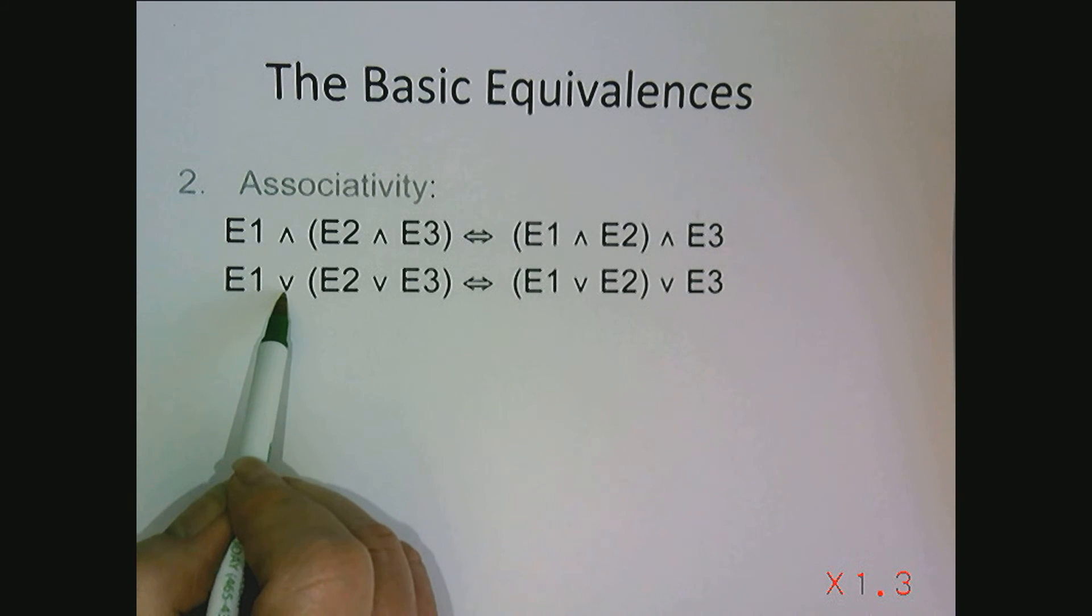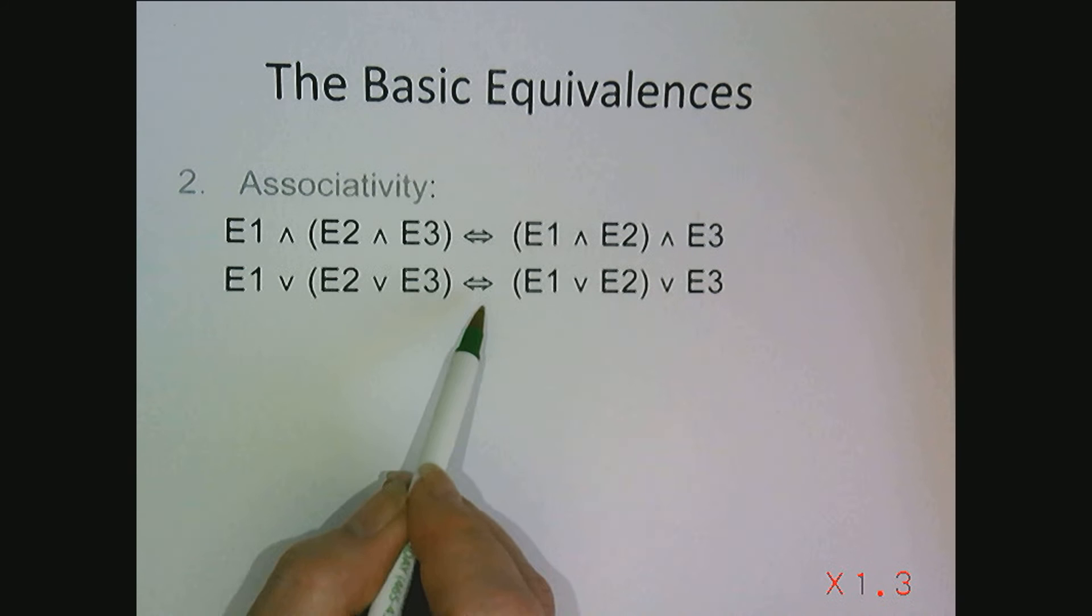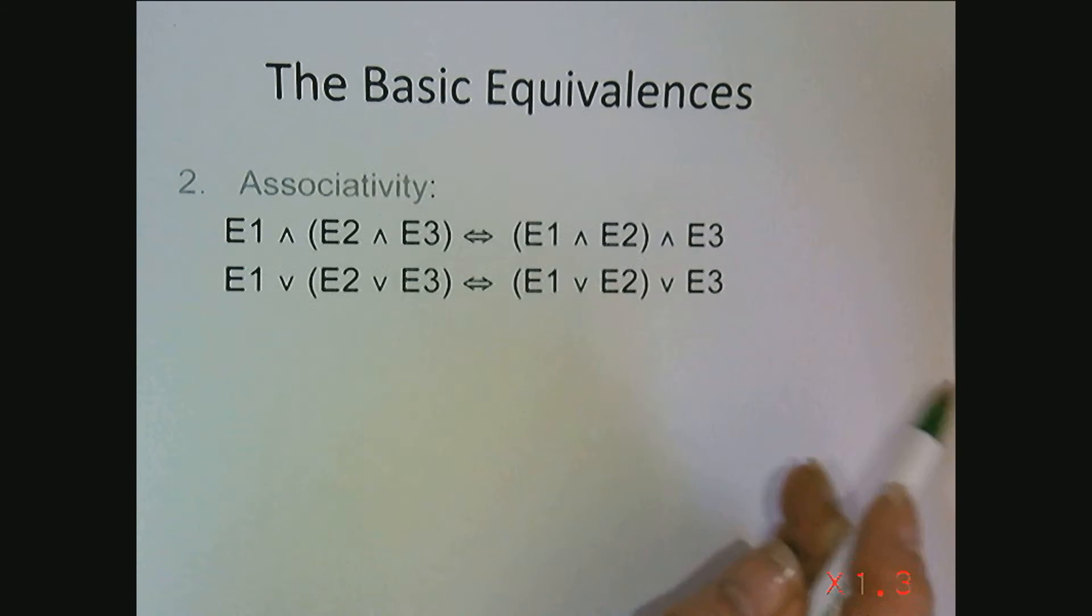Same thing with disjunction. Disjunction is associative. So E1 or the quantity E2 or E3 is equivalent to the quantity E1 or E2 or E3.